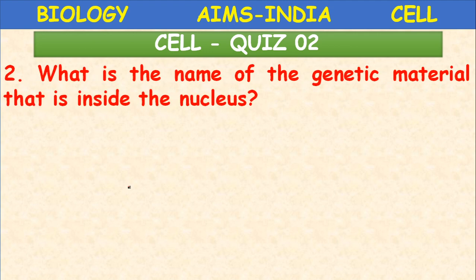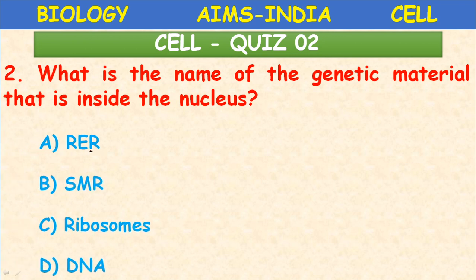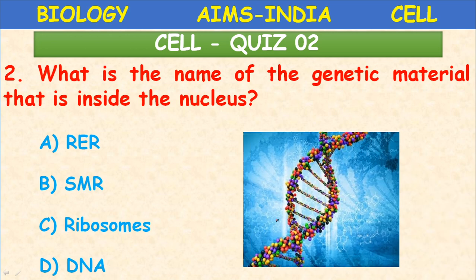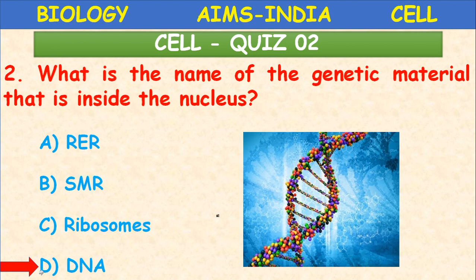Next question: what is the name of the genetic material inside the nucleus? The answer is DNA. The full form of DNA is deoxyribonucleic acid — the genetic material present in the nucleus. The DNA is present in the genes, on the chromosomes: chromosomes contain genes, and genes contain the genetic material called DNA.